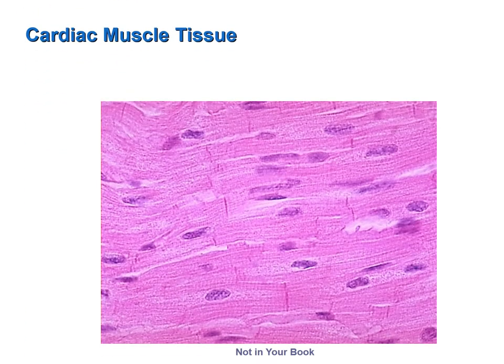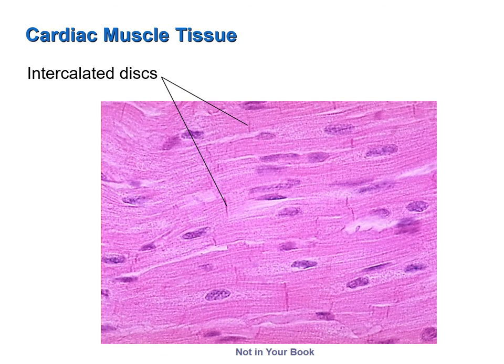This is a sample of cardiac muscle tissue — you may remember it from the tissues lab earlier in the semester. Notice that cardiac muscle tissue, like skeletal muscle tissue, is striated. However, what cardiac muscle tissue contains that skeletal muscle tissue does not are the intercalated discs. These intercalated discs — the junctions between adjacent cardiac myocytes — include gap junctions and desmosomes.